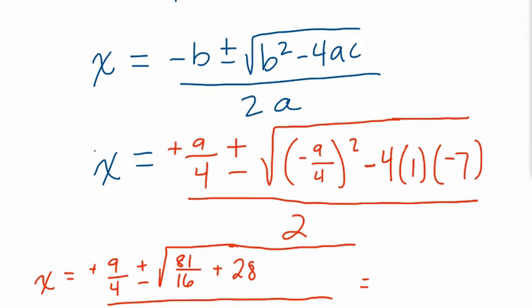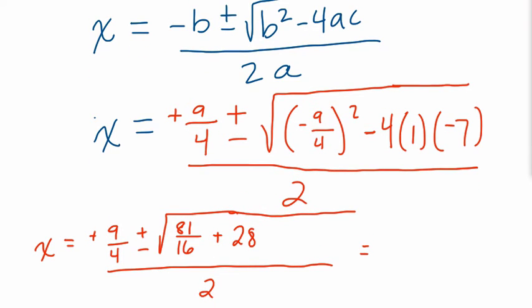So on the calculator to evaluate this, what I would do is just enter it in at this point. We're going to have two equations, really. We're going to have one equation where we add these things. So it'll be nine-fourths plus the square root of 81 over 16 plus 28, right, all divided by 2.